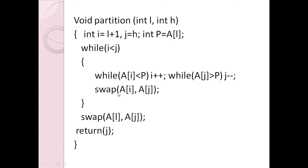There is a conditional swap: if i is less than j, perform the swap; otherwise, do not. When i becomes greater than j the loop stops, and at that point we swap the l-th element (the pivot) with the j-th element, as shown in the example. Then we return the value of j.